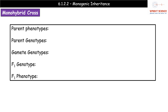First, the parent phenotype — this looks at what those original characteristics were. We had tall-stemmed crossed with short-stemmed, so that's our phenotype: tall stem and short stem. Then we need to think about the genotypes. Because they are true breeding, they will have two of the same alleles. We'll use T's in this case — capital T's for the tall ones and lowercase t's for the short ones.